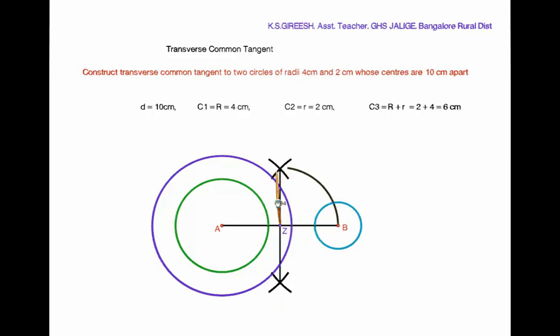Now, with Z as center, AZ or BZ as radius, draw C4 circle. Mark the intersecting point of C3 and C4 circles as G and H.